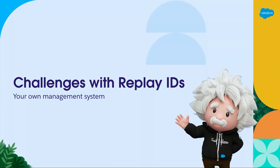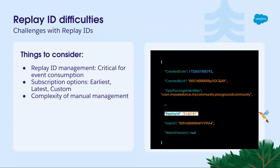The PubSub API is great — it really makes life easier for developers building applications that connect with Salesforce and react to events. But there are some challenges with the PubSub API, and that's with replay IDs. You can see in the payload example there's a replay ID. That replay ID is what your application needs to manage events properly — it's a marker to understand which event in the sequence was the last one you received and processed.